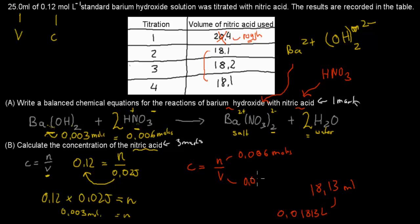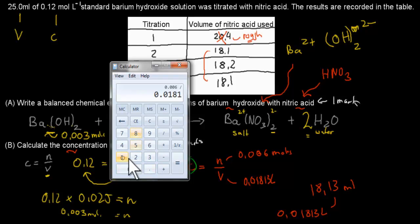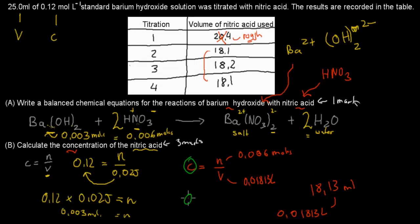The question isn't asking for volume — it's asking for concentration. Now that we have our moles (0.006) and our volume (0.01813 L), we can calculate the concentration: 0.006 ÷ 0.01813 = 0.331 mol/L. And that's the answer.